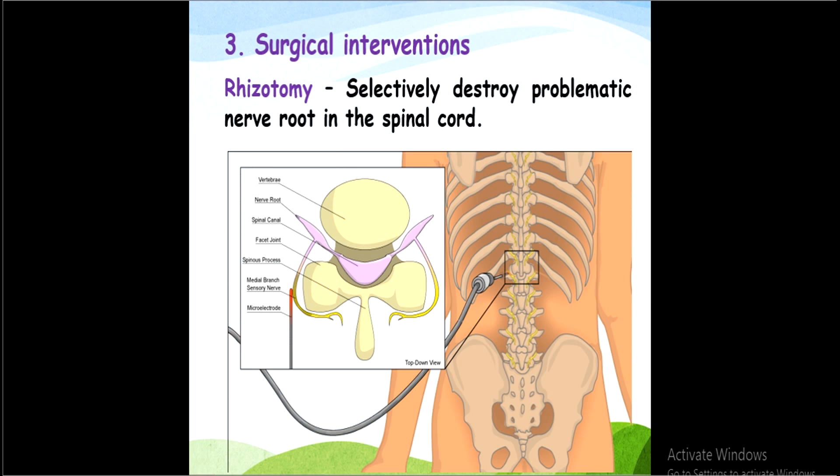The second surgical intervention is rhizotomy, which selectively destroys problematic nerve roots in the spinal cord. As shown, within the spinal cord, all problematic nerve roots are either totally or selectively destroyed, so that pain sensation and pain modulation do not occur.